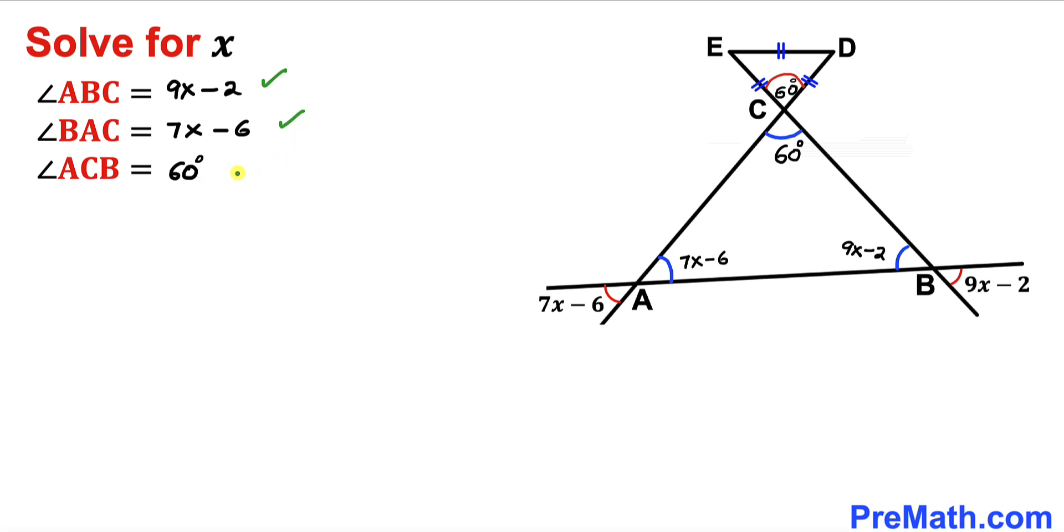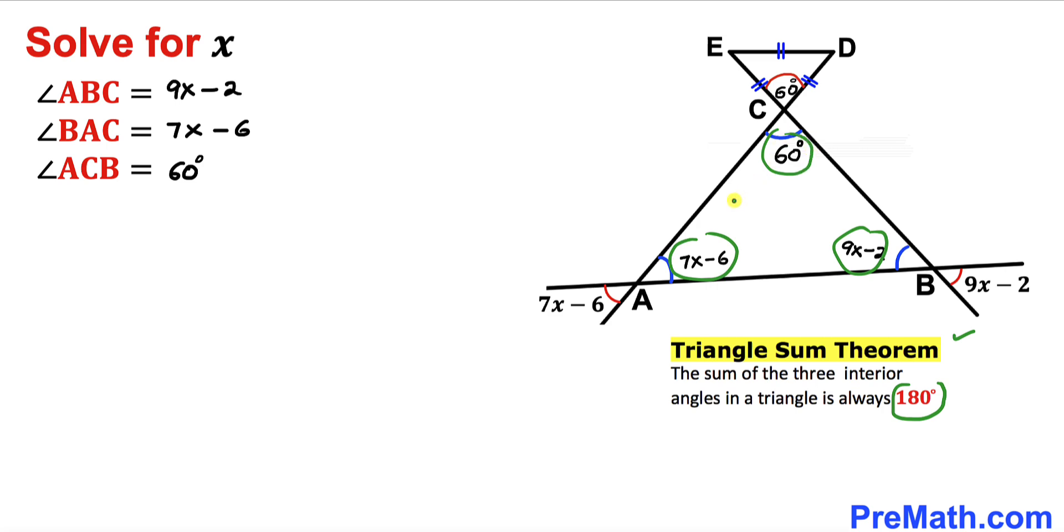Now let's recall the triangle sum theorem. According to this theorem, the sum of the three interior angles in triangle ABC must be 180 degrees. That means if we add these three angles, that must be equal to 180 degrees.